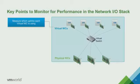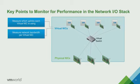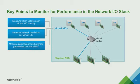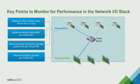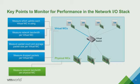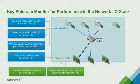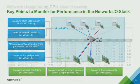In terms of networking, we have a layout of the devices in VMware networking: the virtual machine's VNIC, a switch managed by the VM kernel, and physical NICs. What can we measure? We can measure which uplinks each virtual NIC is using, network bandwidth per virtual NIC, packet count, average packet size per virtual NIC, and drop packets per virtual NIC. On the physical side, network bandwidth, packet count, average packet size, and drop packets per physical NIC.